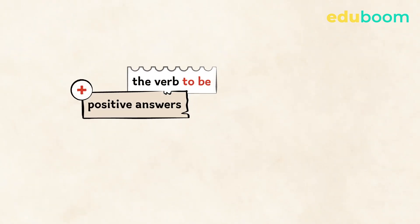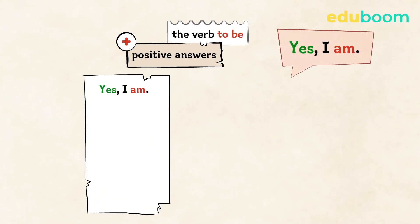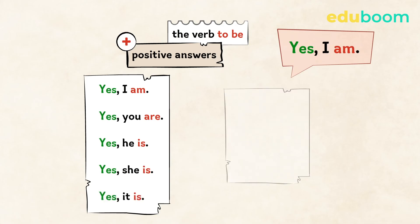Look at the positive answer. You start with yes, then you add a comma, then the personal pronoun and the form of the verb to be. Yes, I am. Yes, you are. Yes, he is. Yes, she is. Yes, it is. Yes, we are. Yes, you are. Yes, they are.